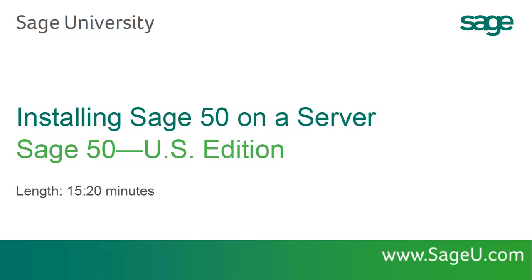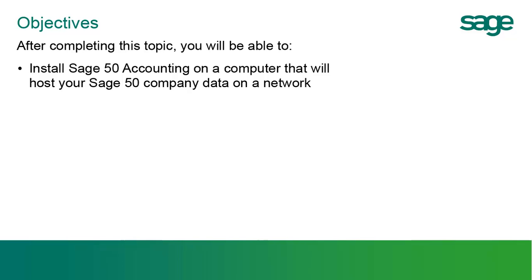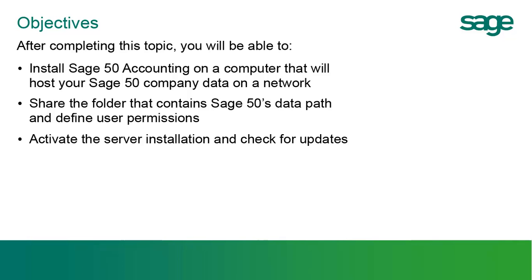Welcome to the Sage 50 U.S. Edition Anytime Learning topic. In this topic, you will learn how to install Sage 50 accounting on the server computer of a Windows network. After completing this topic, you will be able to install Sage 50 on a computer that hosts your Sage 50 company data, share the folder that contains Sage 50's data path and define user permissions, and activate Sage 50 and check for updates.